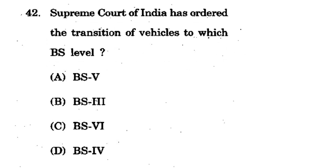Question 42: The Supreme Court of India has ordered the transition of vehicles to which BS level? We know about BS4 and BS3 engines. Options: BS5, BS3, BS6, BS4. The correct option is C - BS6. The Supreme Court of India ordered vehicle transition up to BS6 level.